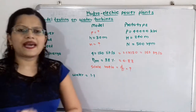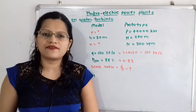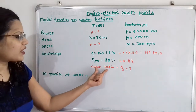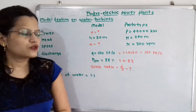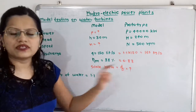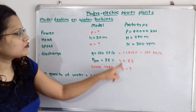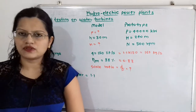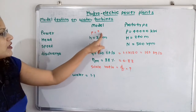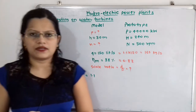Now, which parameters do we have to find? We have to find the different parameters to design the model. First, we find the scale ratio, which is small d divided by capital D — the ratio of the diameter of the model to the diameter of the prototype. Then we have to find the power developed by the model as well as the speed of the model.